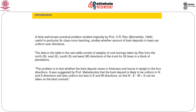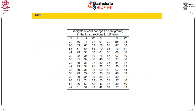The question is: if we assume these 28 observations come from a multivariate normal distribution in dimension 4, do the corresponding population means μ₁, μ₂, μ₃, and μ₄ — for the 4 directions — equal each other? We denote the observations x₁ through xₙ, with n = 28, IID from a multivariate normal distribution with mean vector μ and dispersion matrix Σ, where p = 4.